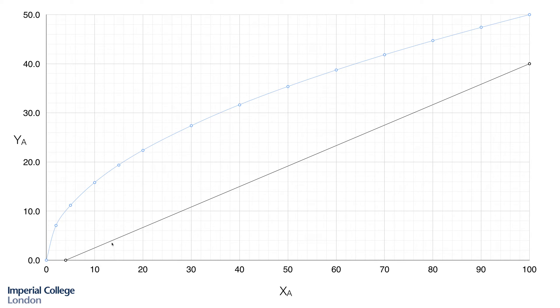The other piece of information we have, of course, is the slope of the operating line. So we know that that slope is given by the ratio of the two flow rates which is 5 over 12.